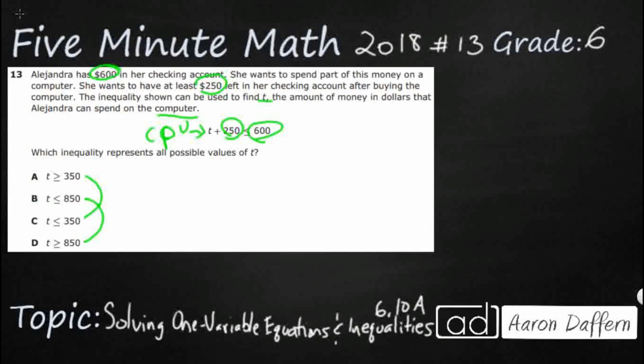Let's see, I'm going to put $350 in there first. So $350 plus $250 less than or equal to $600. So $350 plus $250 is $600. That could possibly work. The $350 could work because it's equal to $600.